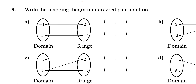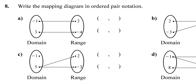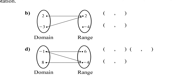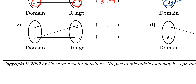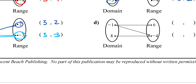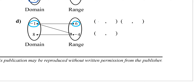For question 8, write the mapping diagram as ordered pairs. Letter A: negative 1 pairs with 2, giving negative 1 comma 2; and 3 pairs with negative 4, giving 3 comma negative 4. Letter B: 2 pairs with 2, and negative 3 also pairs with 2. Letter C: 5 pairs with 2 giving 5 comma 2, and 5 also pairs with negative 3. Letter D: negative 1 pairs with 6 and also with negative 4; 8 pairs with negative 4.